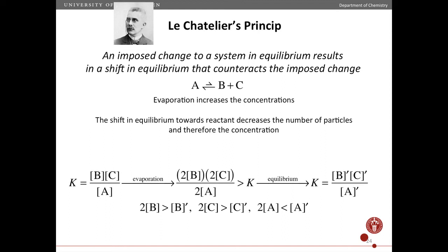So to decrease the concentration of particles, you shift the equilibrium from products, which has two particles, to reactants, which has one particle. So one way to think about it is that the evaporation leads to an increase in concentration, and that can be counteracted by shifting the equilibrium towards the side with the fewer number of particles.